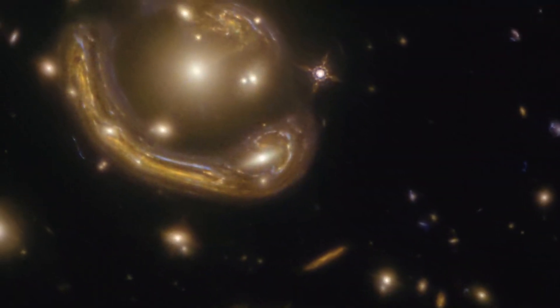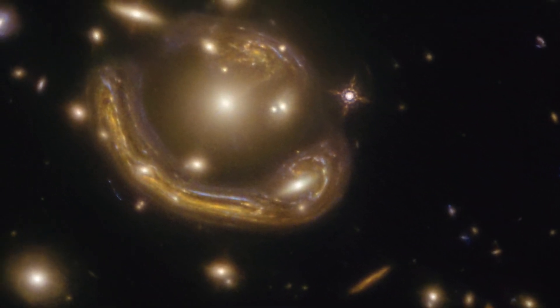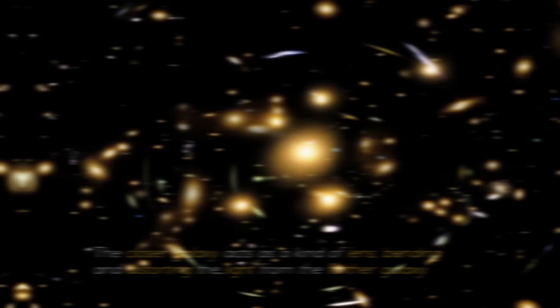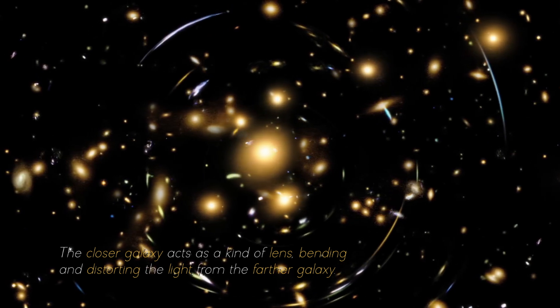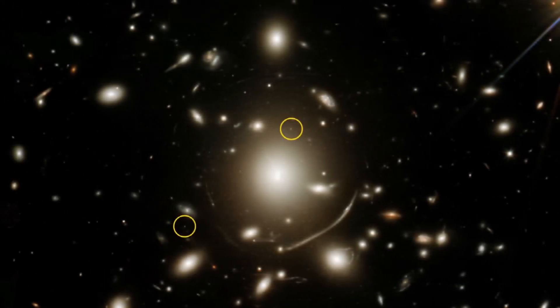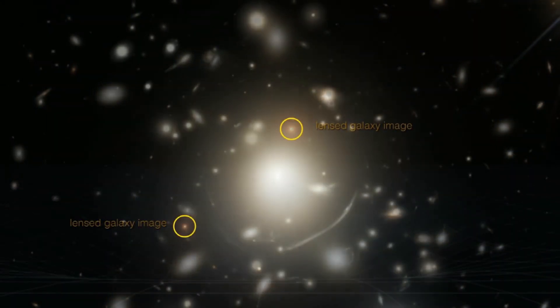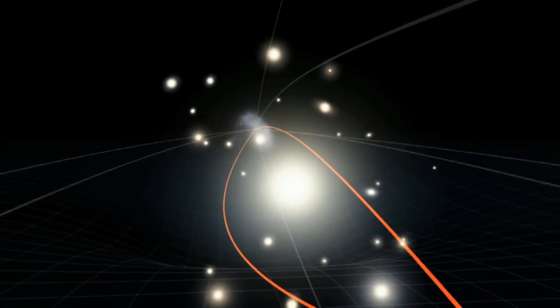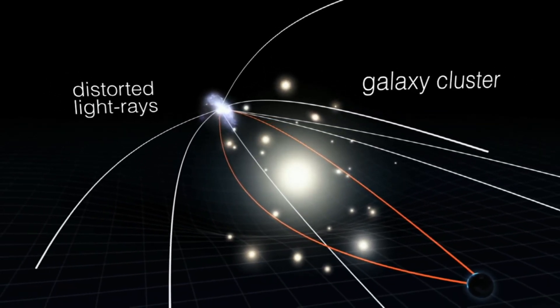Now, imagine that you have two galaxies lined up in our line of sight. One is closer to us, and the other is further away. The closer galaxy acts as a kind of lens, bending and distorting the light from the farther galaxy. How the light from the distant galaxy is distorted, amplified, or even split into multiple images depends on factors such as the mass, distance, and alignment of these two galaxies.